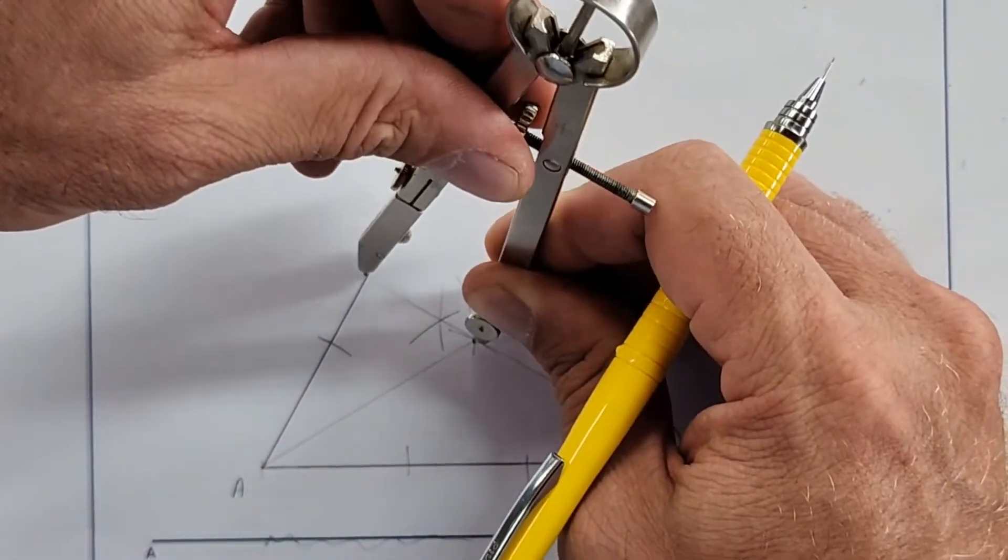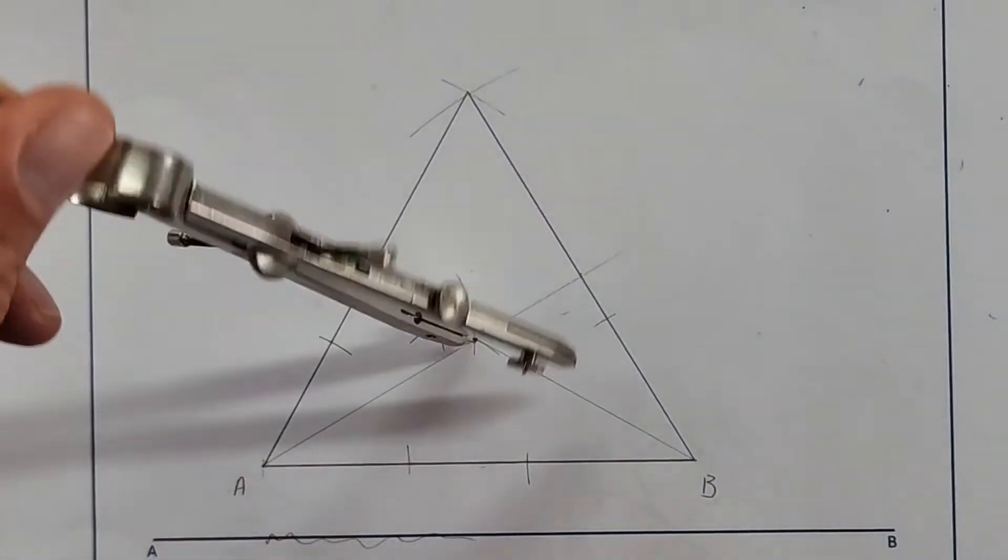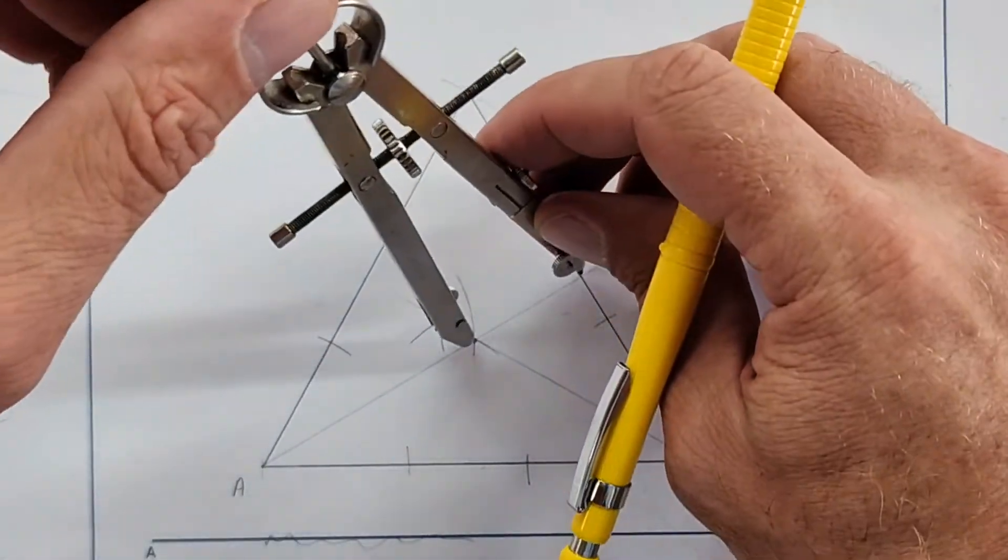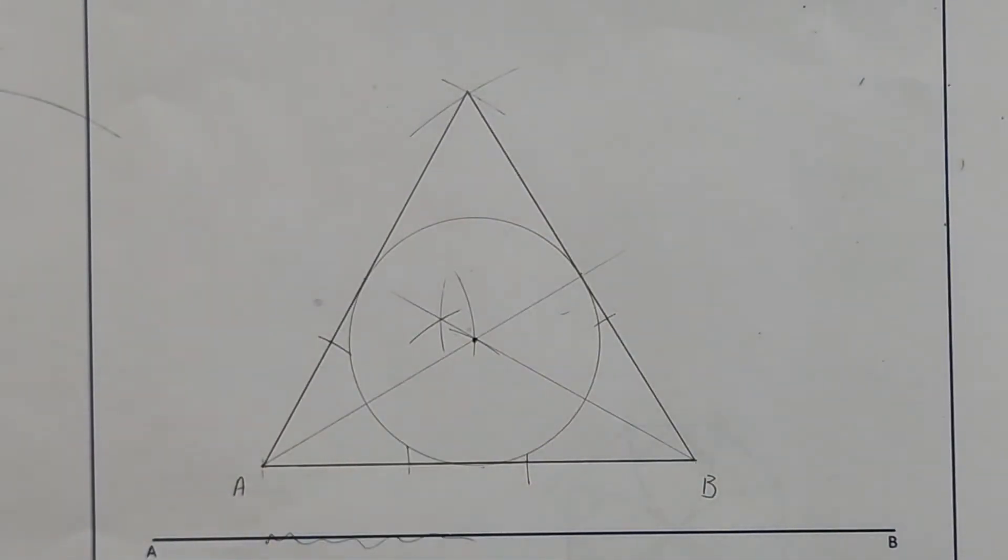If I now set my radius to touch that side, you'll see it's going to touch on the inside all of this. So now I can draw a construction circle. Yes or no? It's just construction. And now I can do one of two things.